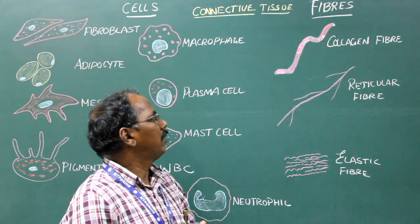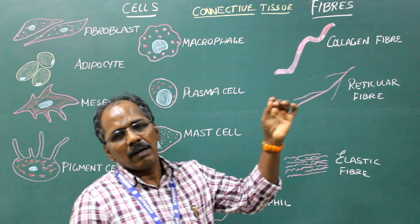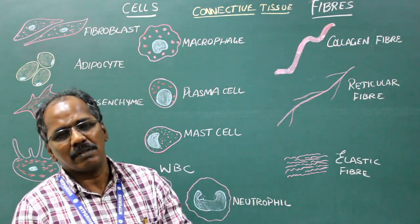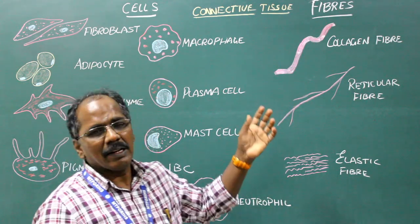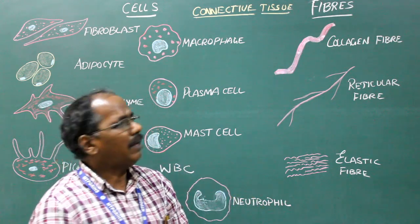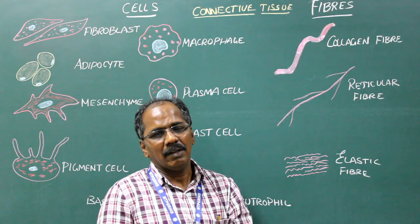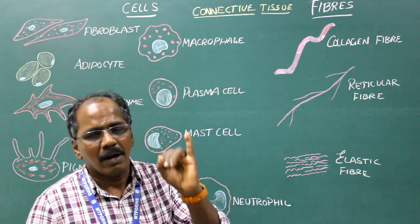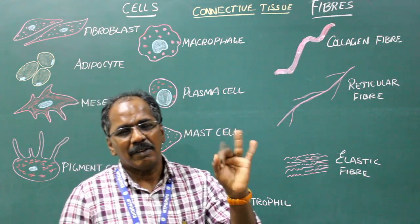Collagen fibers: They are present in all types of connective tissues. They are colorless and contain a protein called collagen. Examples: tendon, aponeurosis, fascia, and articular cartilage.